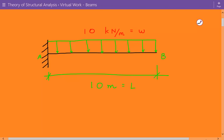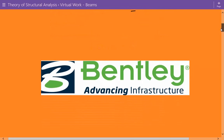And we need to find the displacement at joint B, at the free end. Before we proceed to the solution, I just want to let you know that this example is brought to you by Bentley.